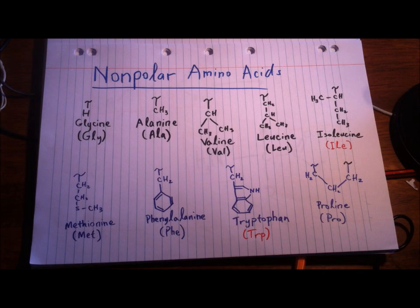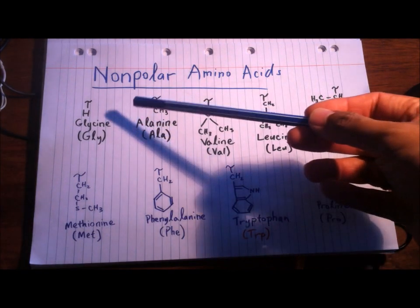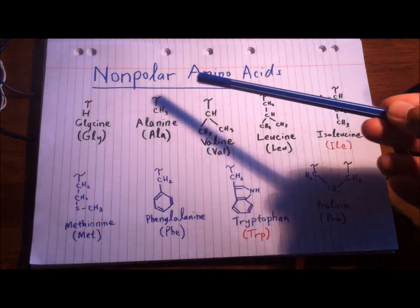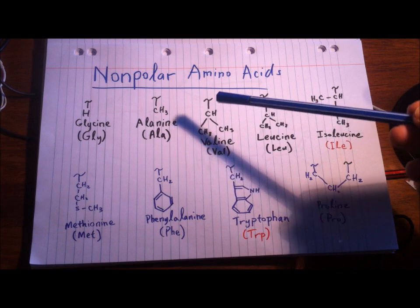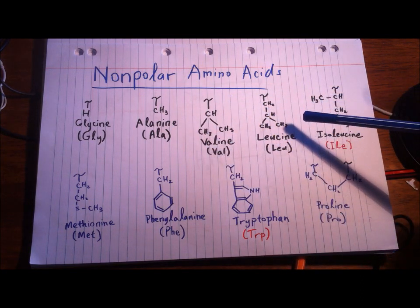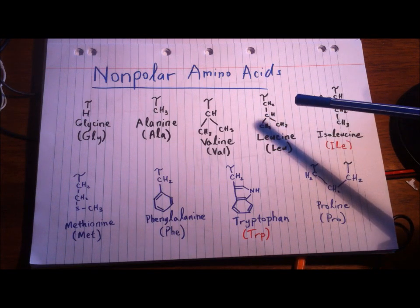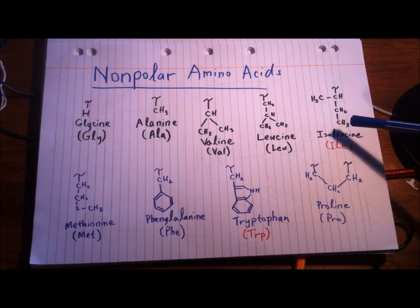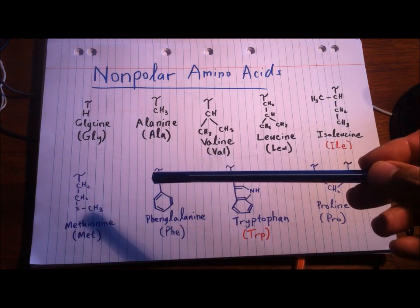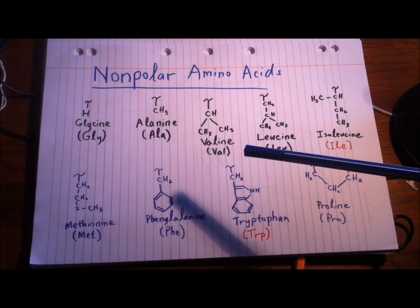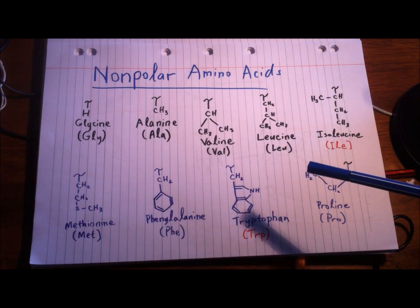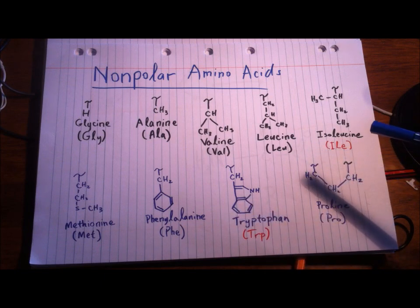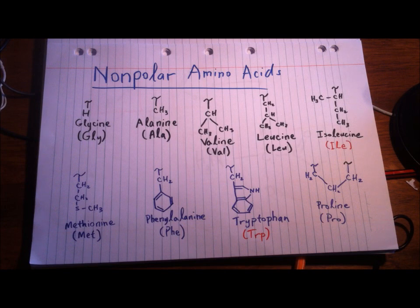So there you have it — those are your nonpolar amino acids. Let's review one more time: glycine has a hydrogen; alanine has a methyl group; valine has an isopropyl; four carbons is butyl — leucine has isobutyl, isoleucine has secbutyl; methionine has three carbons and a sulfur; phenylalanine is like alanine but with a phenyl group; tryptophan has two rings; and proline links back to the nitrogen on the amino acid side.